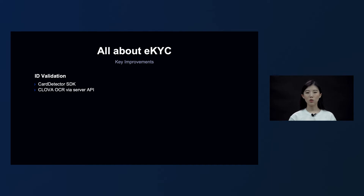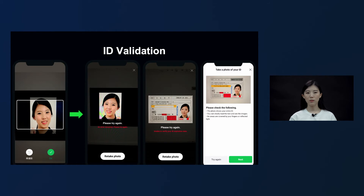First, an identification recognition and verification function using the card detector SDK and Clova OCR was added. In the external SDK previously used, only specific items set within the SDK were verified. After the service was released, we received many screening applications that used face photos or IDs that could not be used, causing difficulties in the overall screening process. Using the card detector SDK, a photo is now taken automatically when the shape of a card is detected, and when the photographed image is uploaded to the server using Clova OCR, we check the information written on the identification — so expired IDs or photos showing only a face can be filtered out in advance.